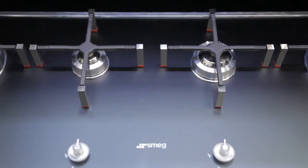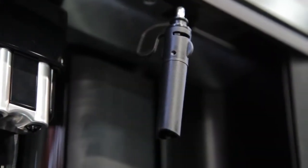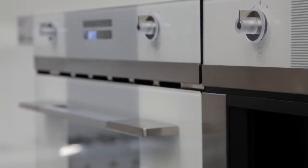The Linear range includes cooktops, built in ovens, warming drawers and built in coffee machine, all made with top quality materials and ergonomic controls and handles.